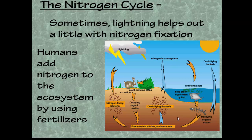Humans can disrupt the nitrogen cycle by using fertilizers — generally animal waste — taking nitrogen from one ecosystem and adding it to another. This can throw off the balance and cause problems in nearby farms or streams if you're not careful about fertilizer use. So there are your three cycles: the water cycle, the carbon cycle, and the nitrogen cycle. There are other cycles, like the phosphorus cycle, but these are the three we really worry about in biology. Make sure you go study those and understand what's going on.